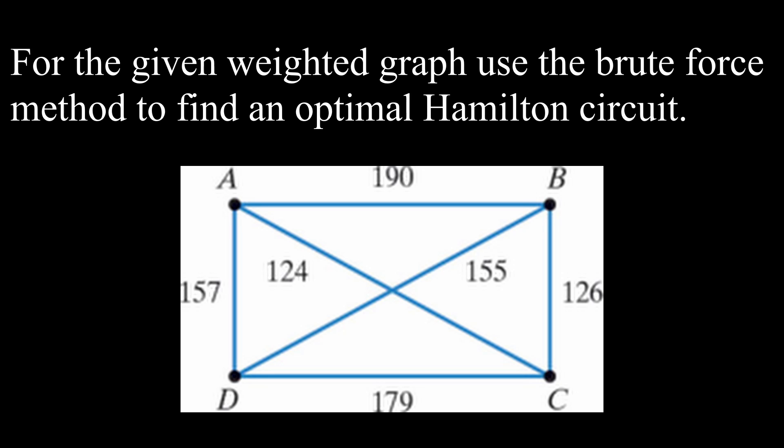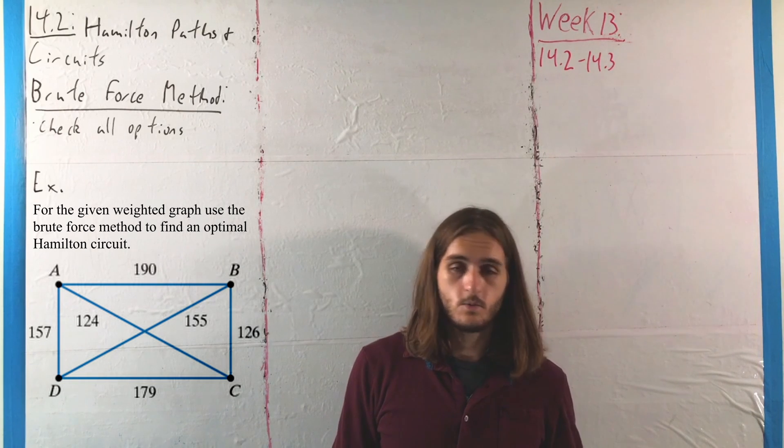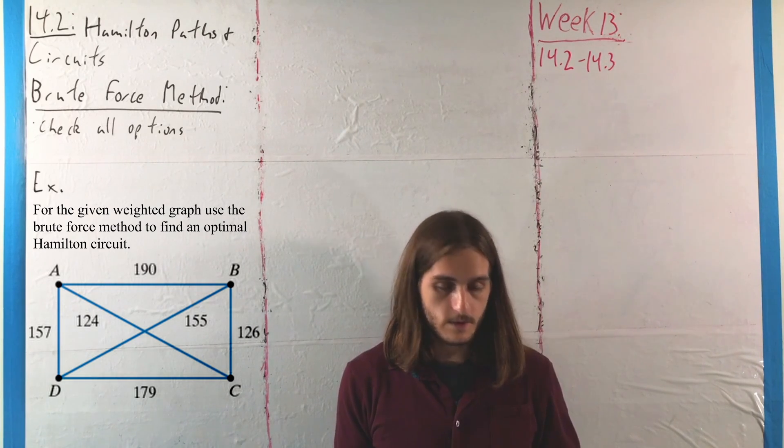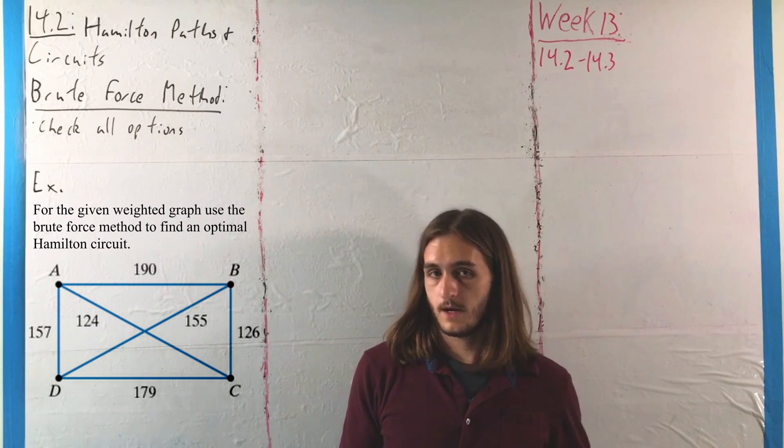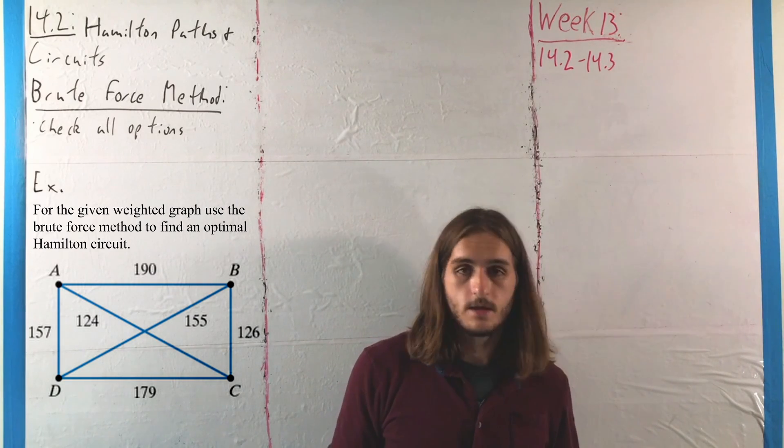For the given weighted graph, we want to use the brute force method to find an optimal Hamilton circuit. Because we are looking at a complete weighted graph on four vertices, we're going to have three factorial or six options that we're going to compare.